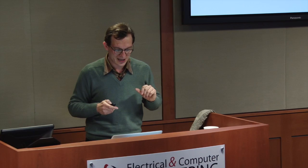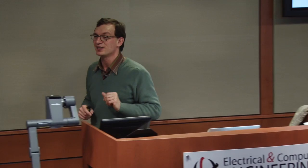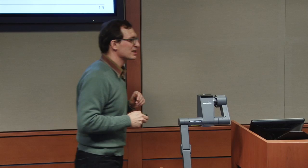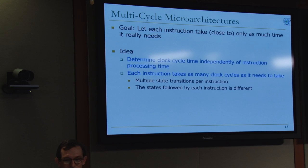We motivated multi-cycle microarchitectures because we want something that actually obeys these principles. The basic idea is very simple: let each instruction take only as much time as it really needs, by dividing the processing into multiple cycles. The key is to determine the clock cycle time independently of the instruction processing time. Each instruction takes as many cycles as it needs, and we have multiple state transitions per instruction. The states followed by each instruction are different.